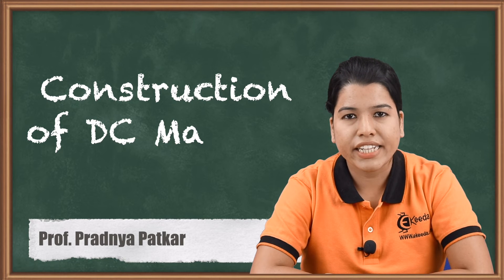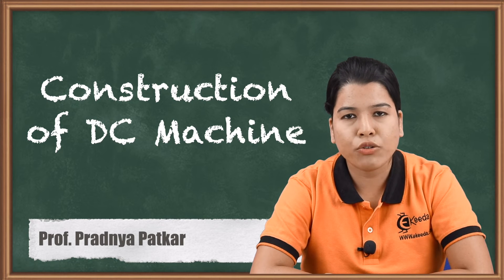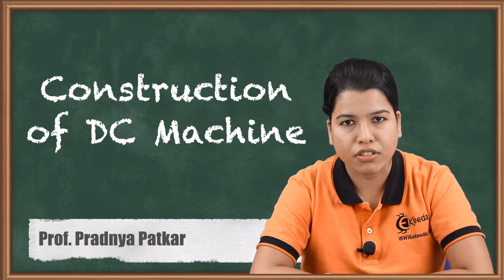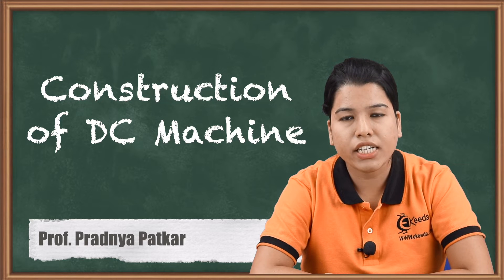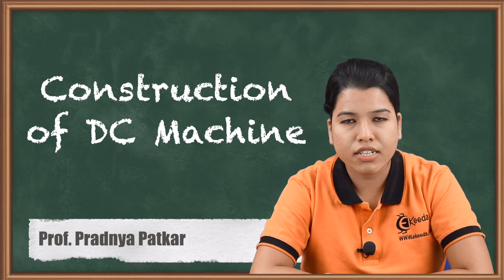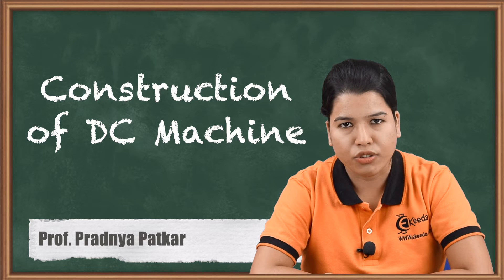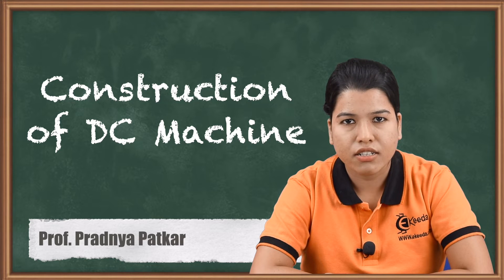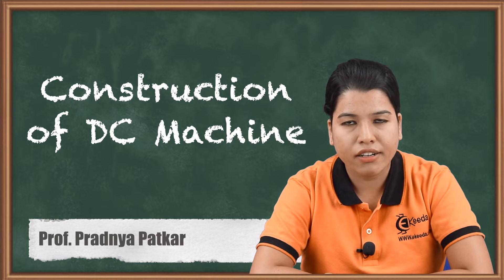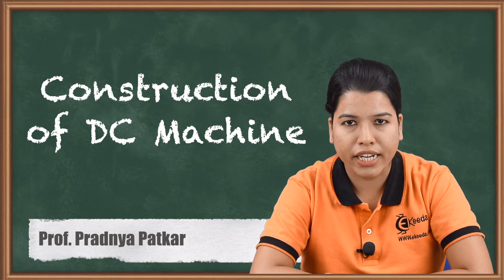Hello friends, in this video we are going to study in detail the construction of DC machine. Any machine basically consists of two parts: first is stator and second is rotor. As the name suggests, stator is the stationary part whereas rotor is the rotating part.